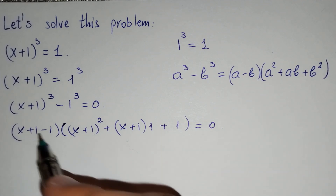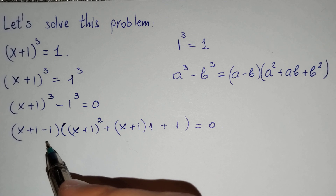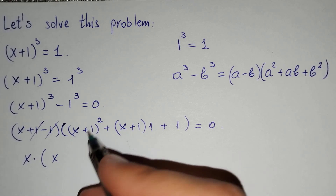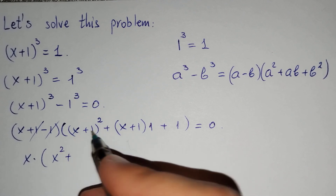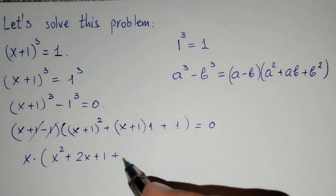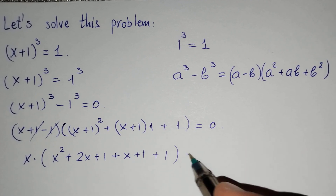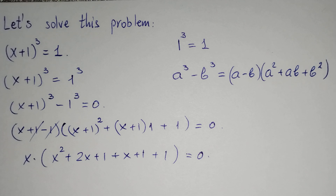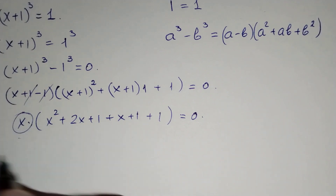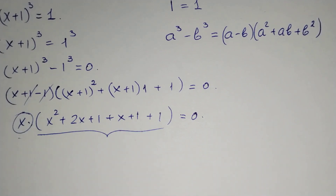Here, 1 and minus 1 cancel, leaving x times (x² + 2x + 1 + x + 1 + 1) equals 0, which simplifies to x times (x² + 3x + 3) equals 0. We know that for the product to be 0, at least one of the multipliers should equal 0.